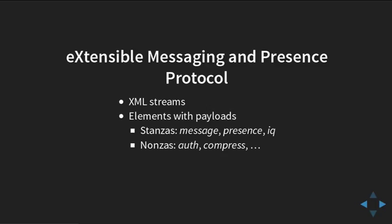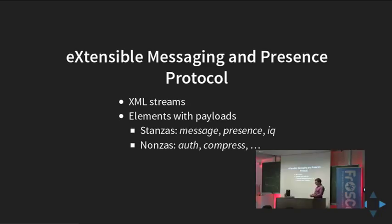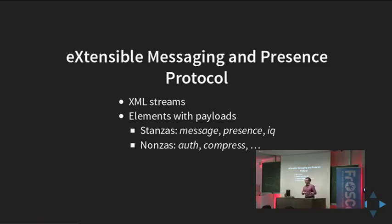XMPP has two types of XML elements. One group is called stanzas: message, presence, and IQ elements which deliver actual content. IQ stands for Info and Query — it's a request-response protocol where all IQ messages require a response and must have an ID attribute. There's another group of elements, recently relabeled 'nonzas' because they're not stanzas, which do stream control like authentication or enabling compression.